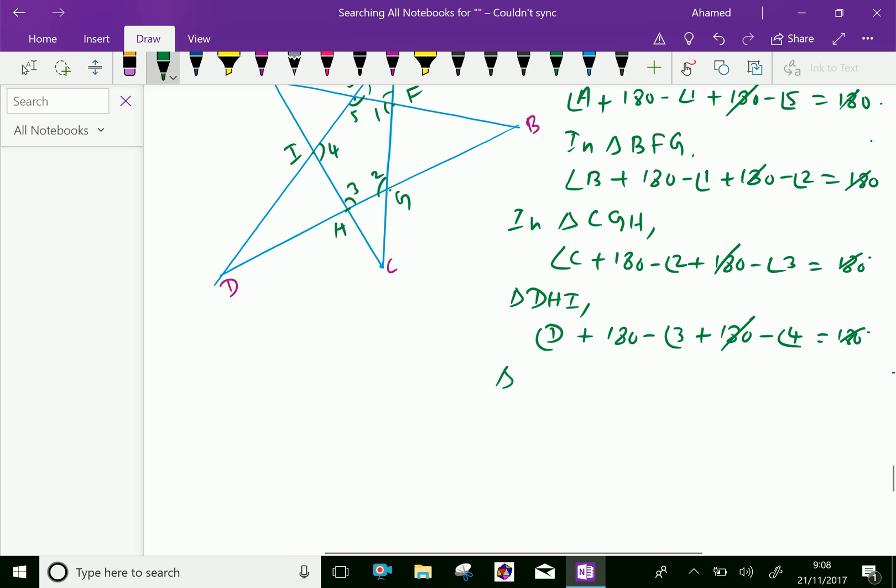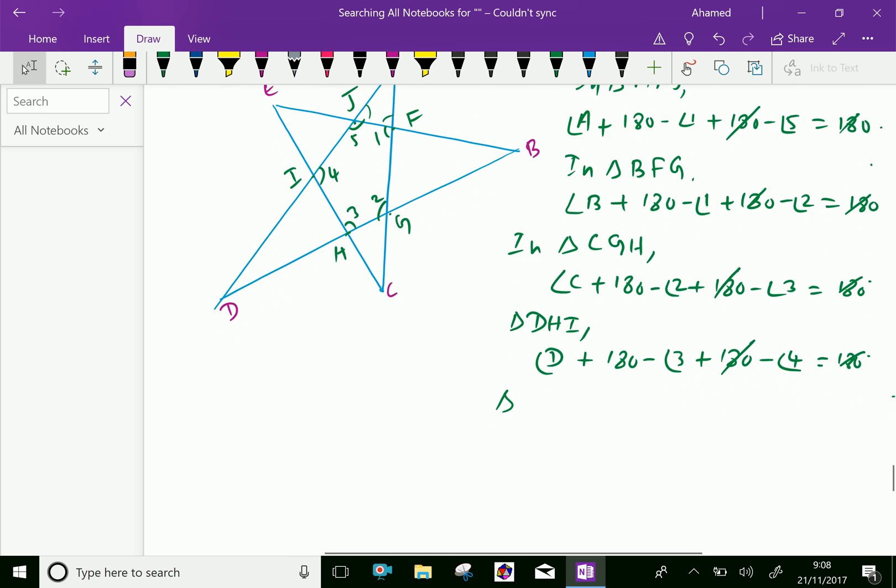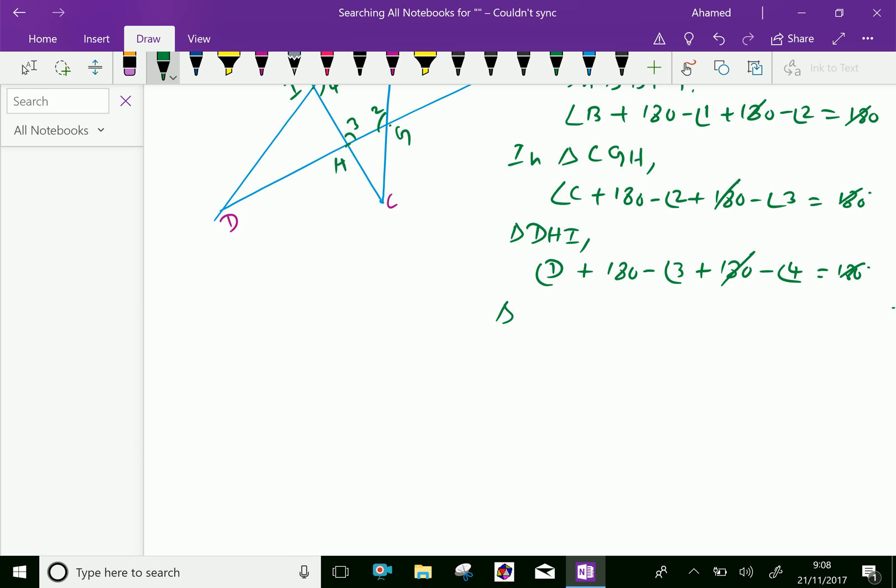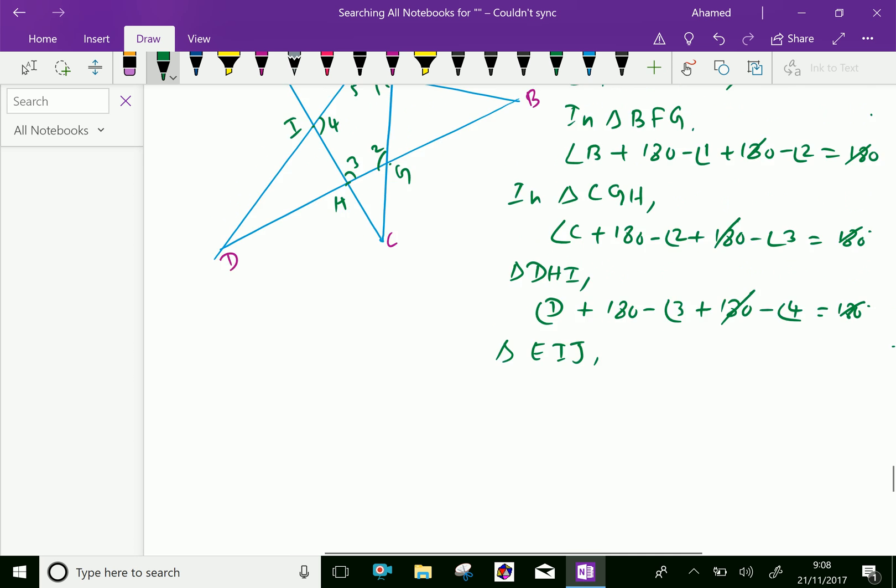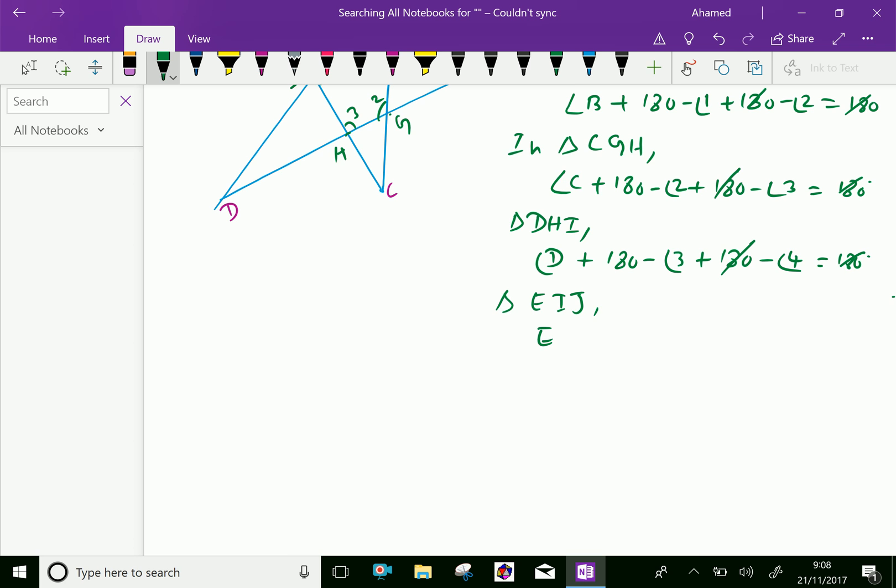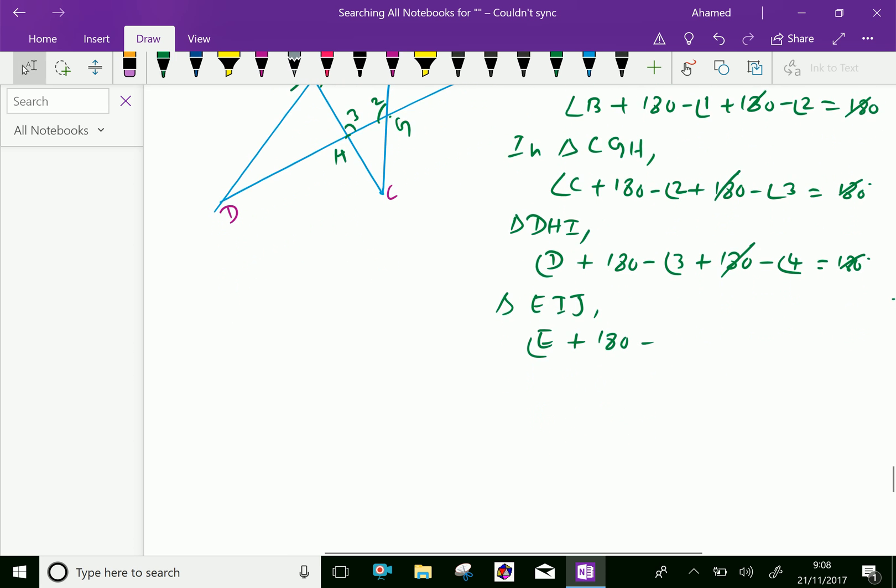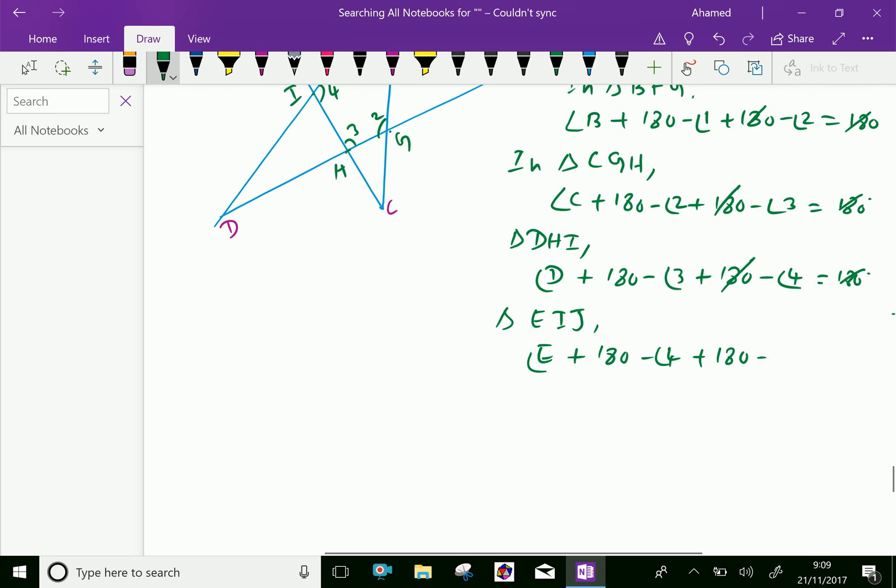Next, the triangle EIJ. The similar manner, angle E plus 180 minus 4 plus 180 minus angle 5 equal 180 degrees. So 180 and 180 cut.